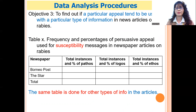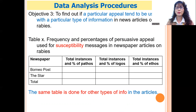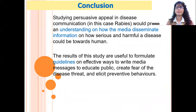For this, I created three separate tables. Only the one for susceptibility is shown here. I'm interested in the frequency, which is later used to calculate the percentage to determine which appeal is used more for susceptibility or risk messages.